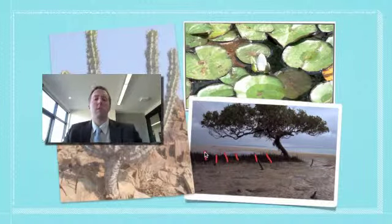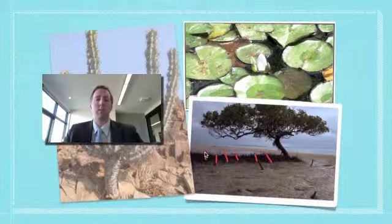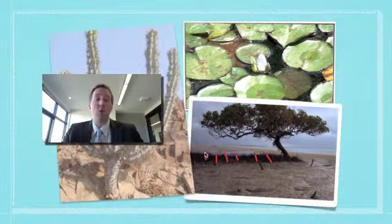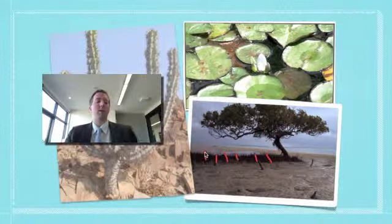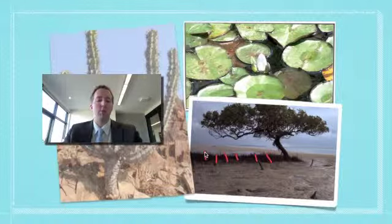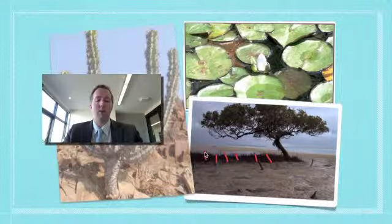So mangrove trees have a couple of great adaptations. One is these aerial roots that enable them to get gases — they basically snorkel for air. The other adaptation is that they can actually get rid of salt from their tissue, and that really helps them to survive really well.